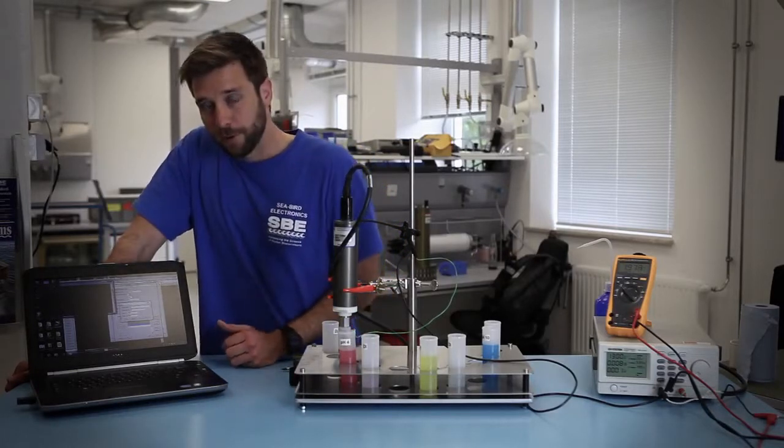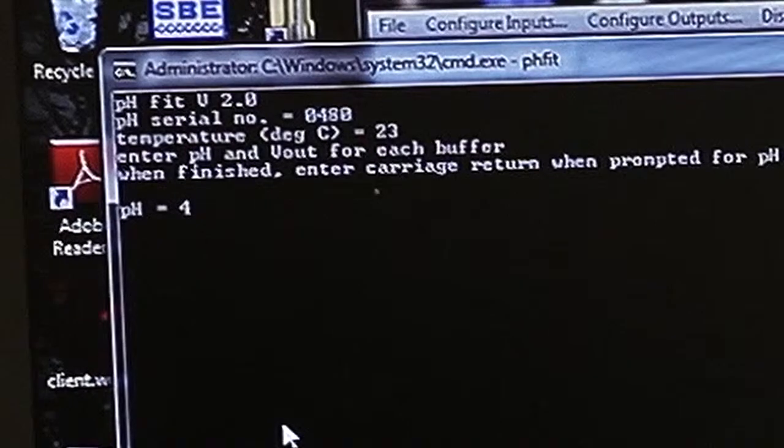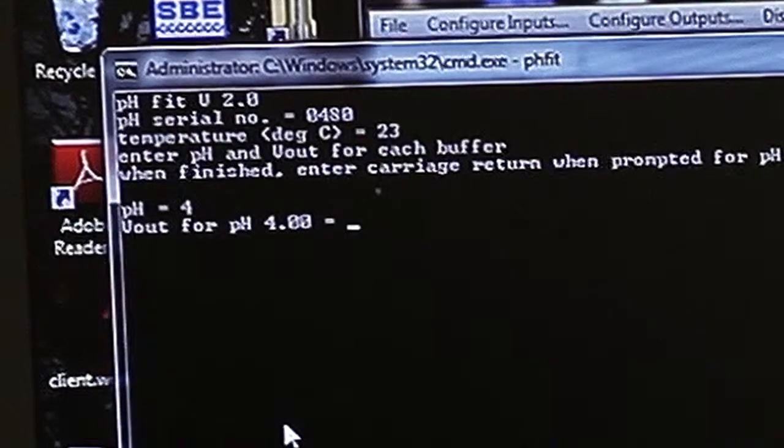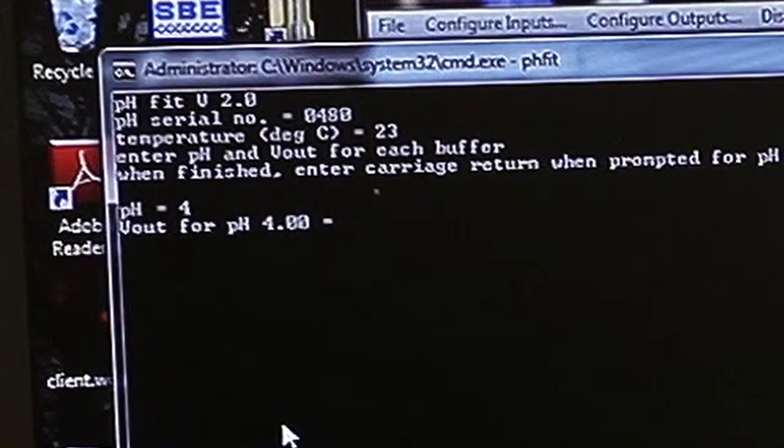Then it asks you for your first pH solution which we'll enter as 4 and the voltage output on the multimeter for the pH probe which for this is 1.977.